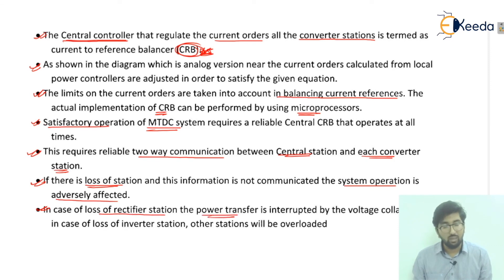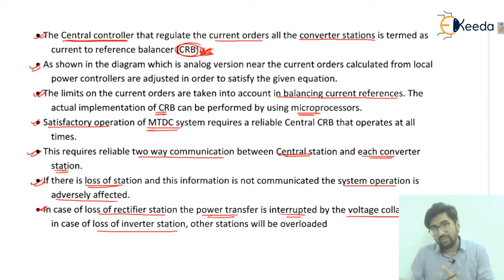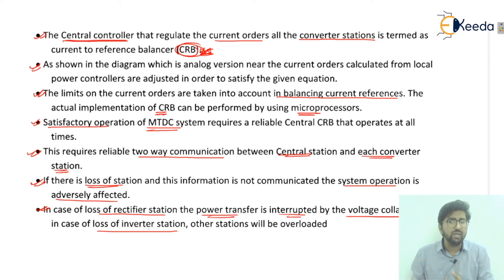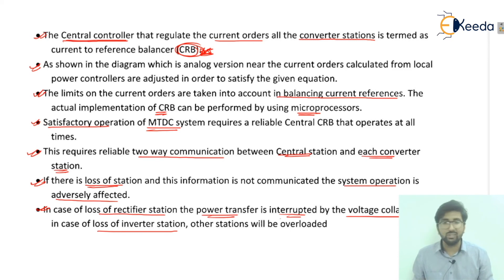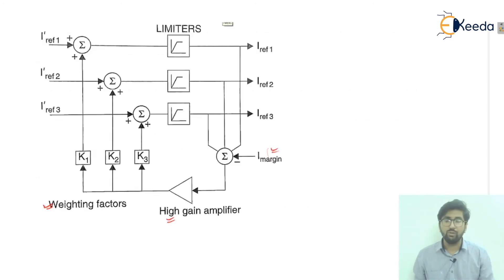In case of loss of the rectifier station, power transfer is interrupted by voltage collapse. In case of loss of the inverter station, the other stations — the rectifier side — will be overloaded. I hope all the points covered here, including the CRB diagram, have been clearly understood.